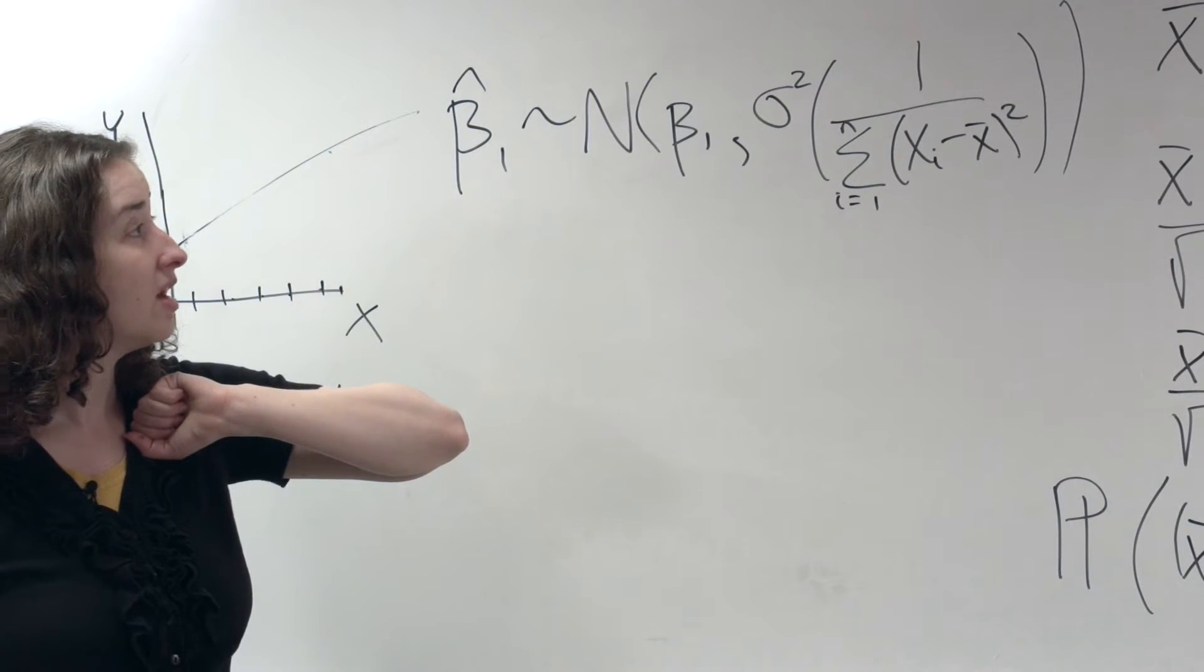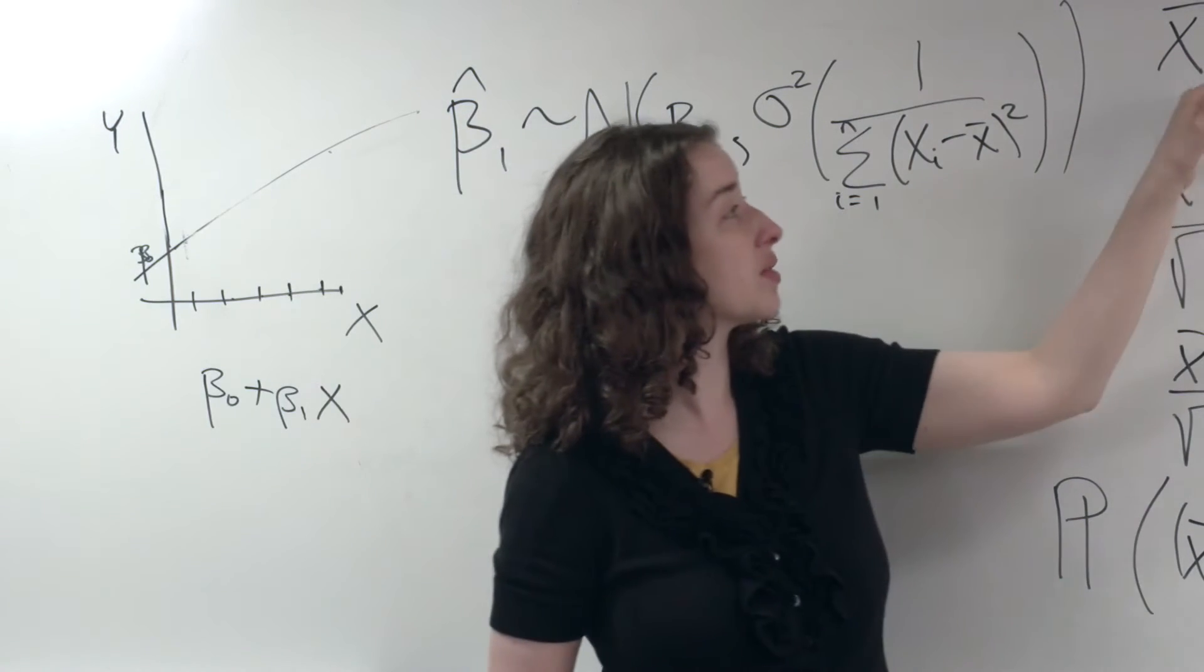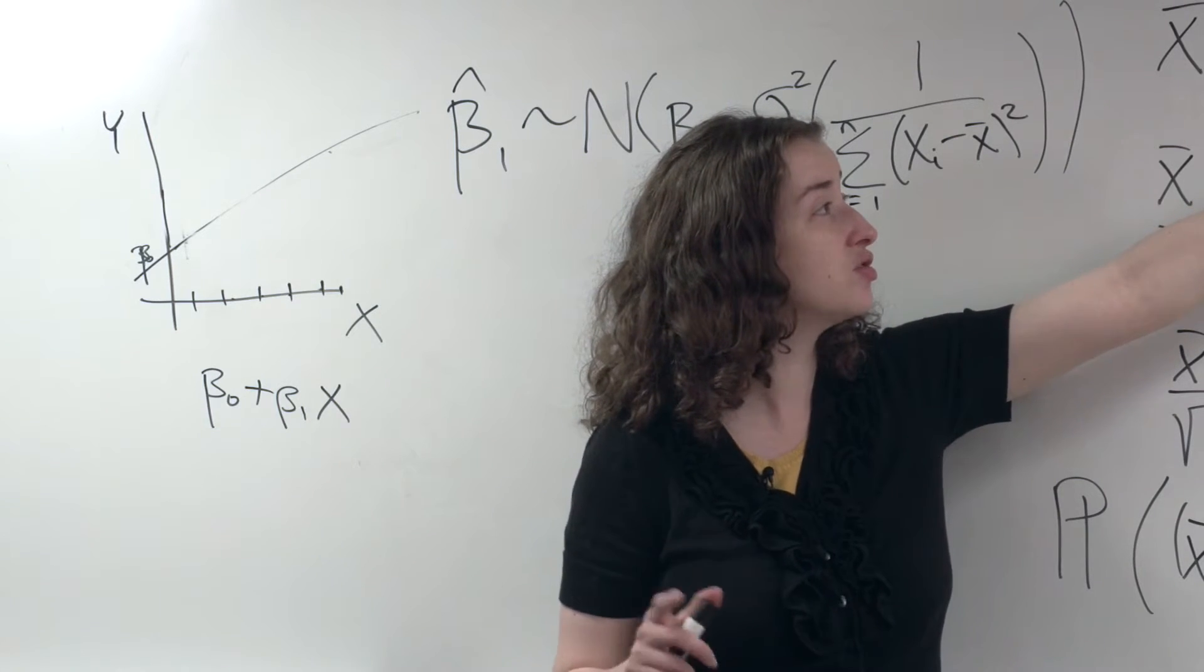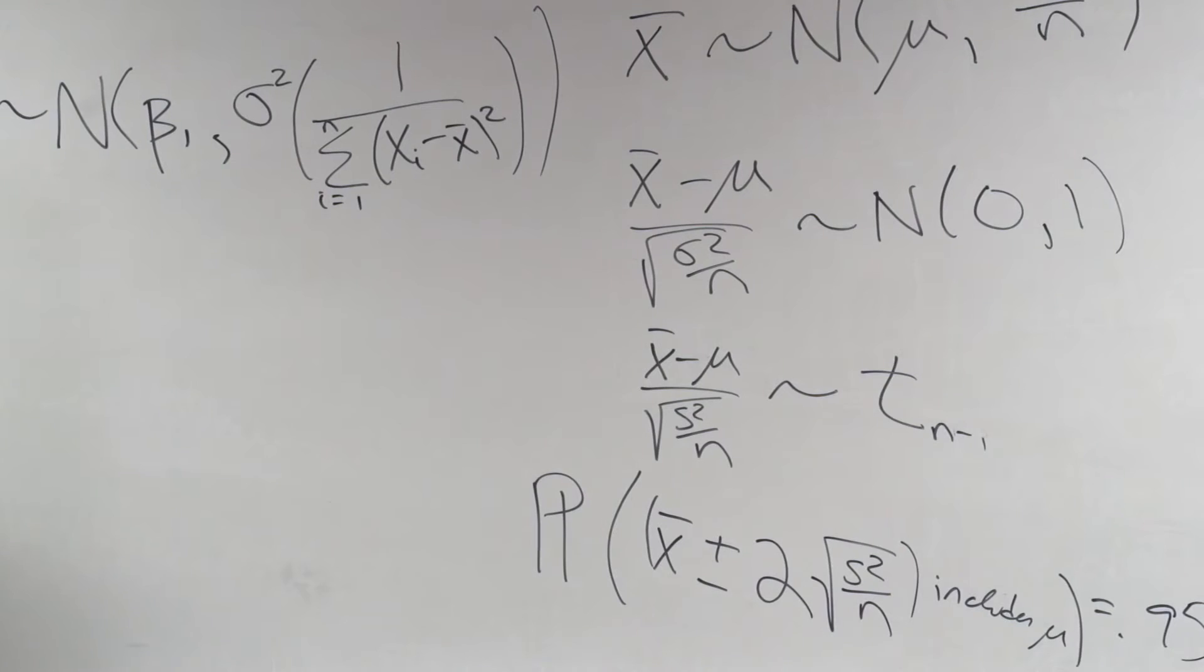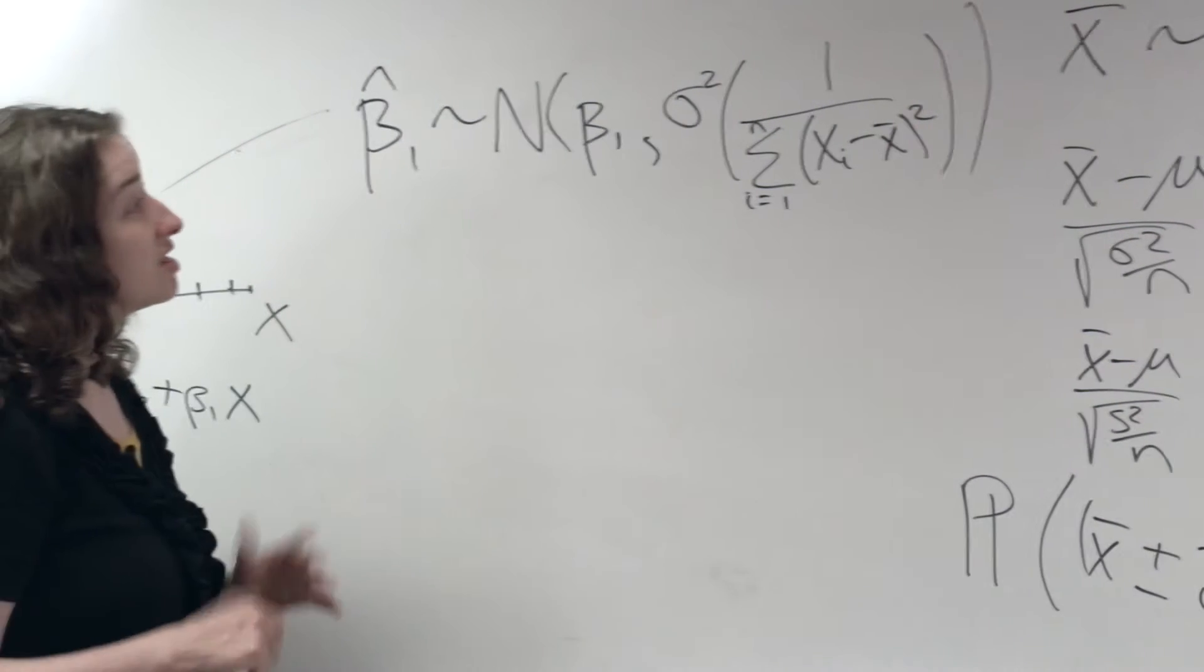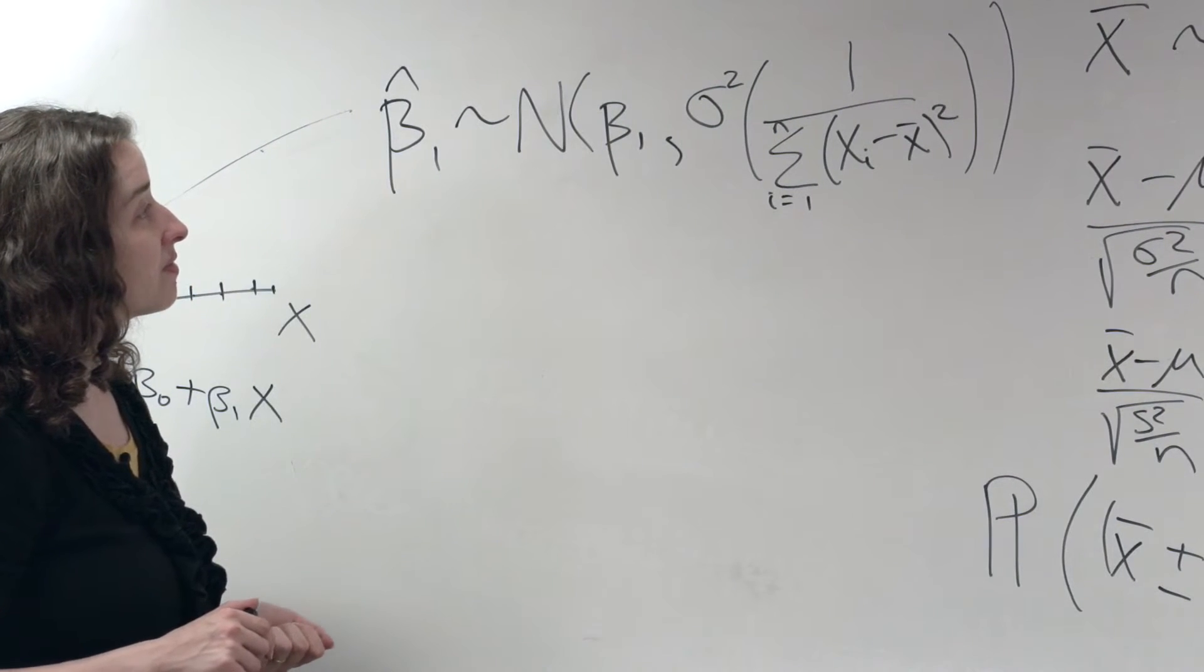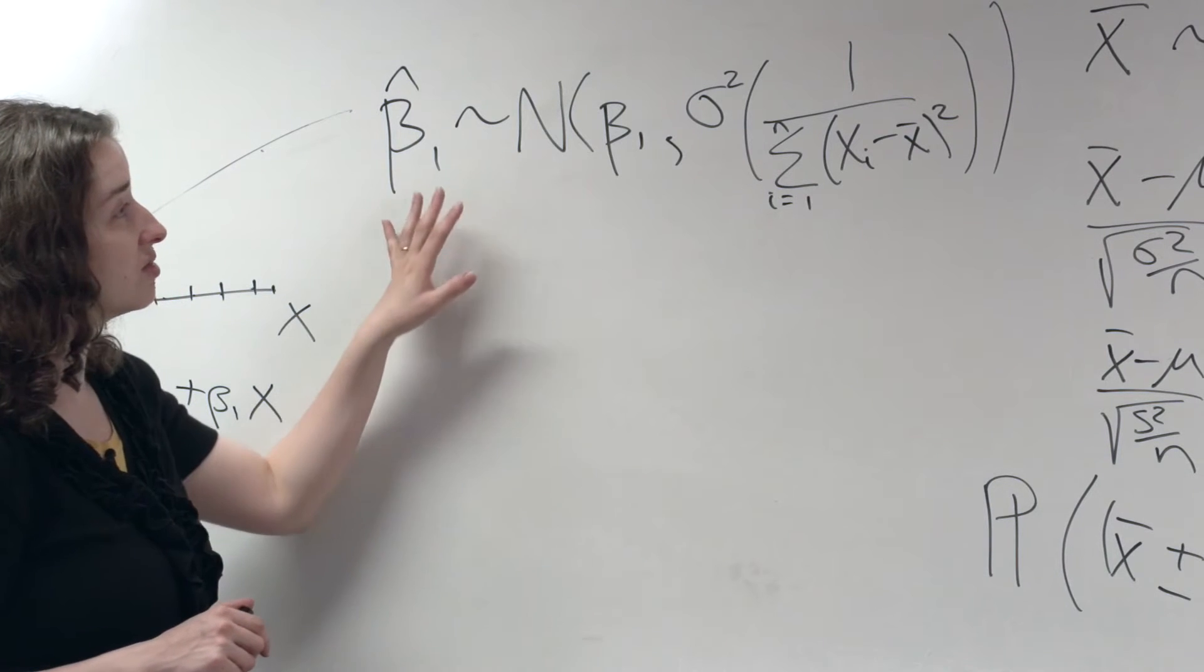So this should exactly parallel what we have here, with the x-bars following a normal distribution with mean equal to the true mean and some particular variance. This is also true by the central limit theorem. This is true by the central limit theorem.